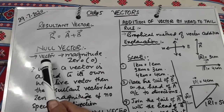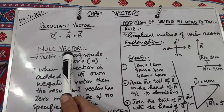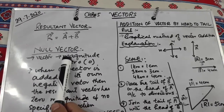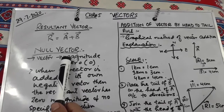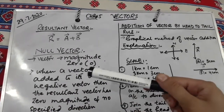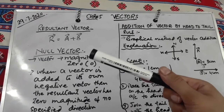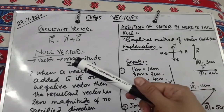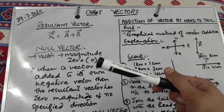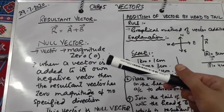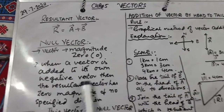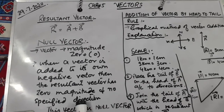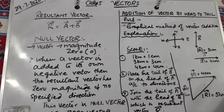Next is null vector. A null vector is a vector whose magnitude is zero. When a vector is added to its own negative vector, the resultant is zero — for example, A added to minus A gives a null vector. This resultant has zero magnitude and no specific direction, and is known as a null vector.